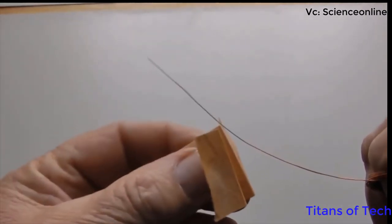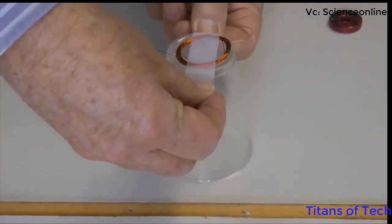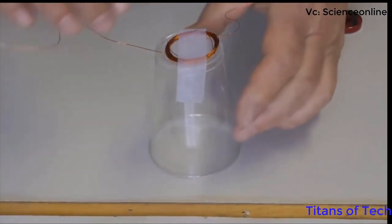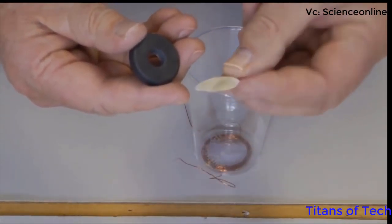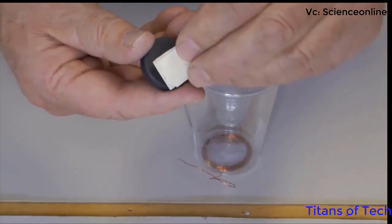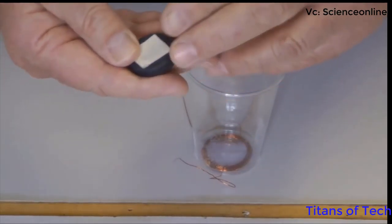I wound the ends around the coil to keep it together. This type of wire is coated with enamel insulation. I used sandpaper to remove the insulation on the wire leads. This exposes the copper metal wire.